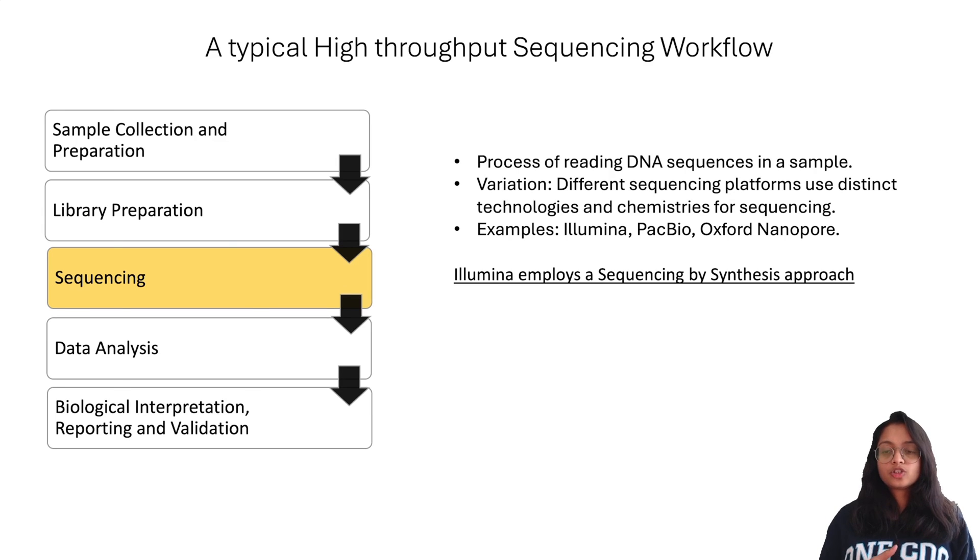Sequencing run refers to the actual process of reading the DNA sequences in a sample. Different sequencing platforms have different technologies and chemistries for reading DNA. Some of the common platforms include Illumina, PacBio, and Oxford Nanopore, each with its own strengths and weaknesses.